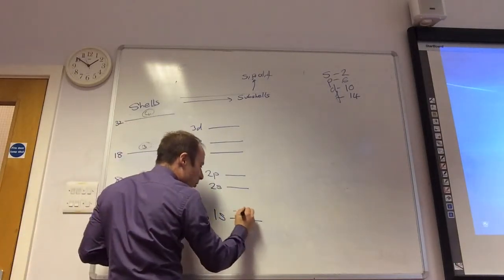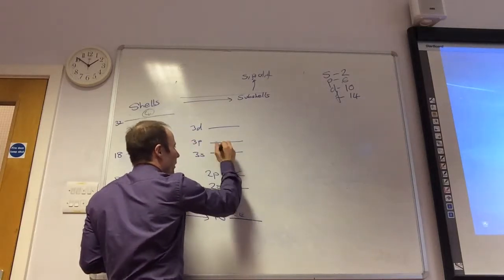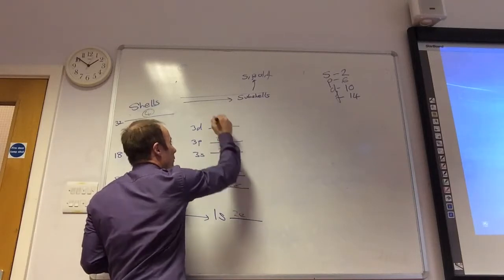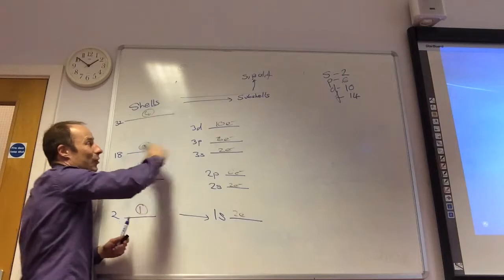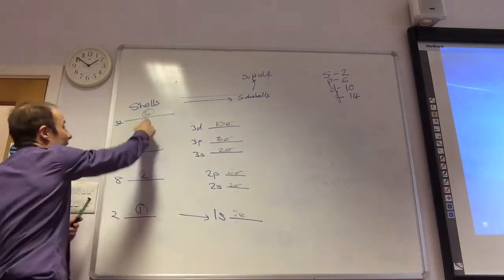If I remember, one S can hold two electrons. Two S, two electrons. Two P, six electrons. That's always two. So, P is always six electrons, and the D is ten electrons. Can you see why 18 electrons are made up of ten plus six plus two?